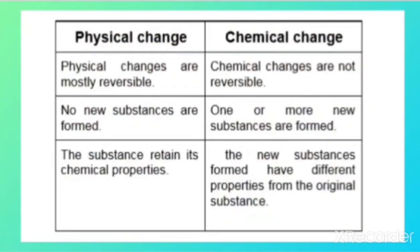Physical changes are mostly reversible, but chemical changes are not reversible. In a physical change, no new substances are formed, whereas in a chemical change, one or more new substances are formed. In a physical change, the substance retains its chemical property, while in a chemical change, the new substances formed have different properties from the original substances.